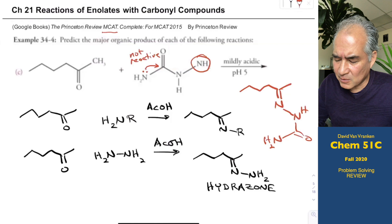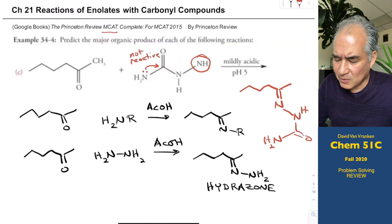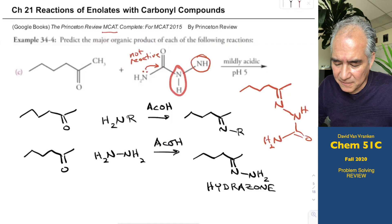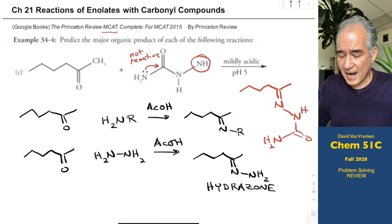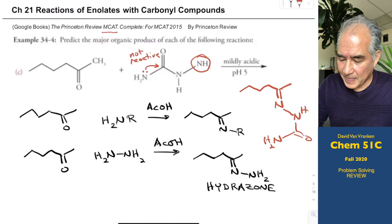How would you work that problem? You'd have to recognize that this NH can't even form a C=N double bond because it's only got one free NH. Then you're deciding between the other two nitrogens: one is not reactive because the double bonds are donating into the carbonyl, whereas the other NH2 group is super reactive and super nucleophilic in aqueous conditions.